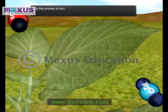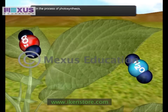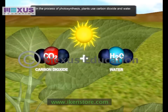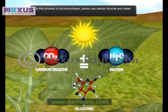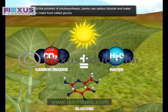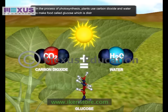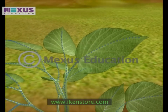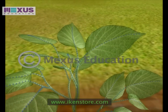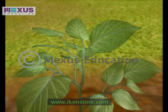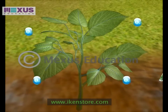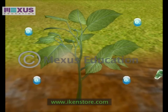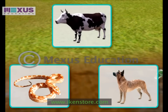In the process of photosynthesis, plants use carbon dioxide and water to make food called glucose, which is distributed to all parts of the body. As a result, the plants breathe out oxygen into the air, which all living beings need to survive.